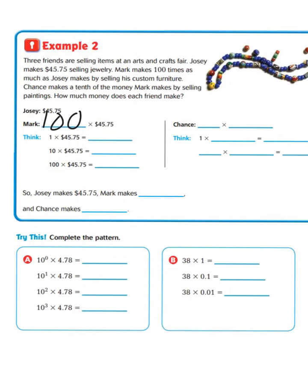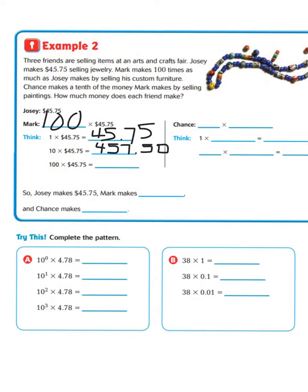Mark makes 100 times $45.75. We know that 1 times $45.75 equals $45.75. Now, 10 times $45.75 — well, we know there is one zero, so we are going to have to move our decimal place one place value to the right. If we move one place value to the right, our decimal point is going to end up between the 7 and the 5. Therefore, 10 times $45.75 is going to be $457.50.